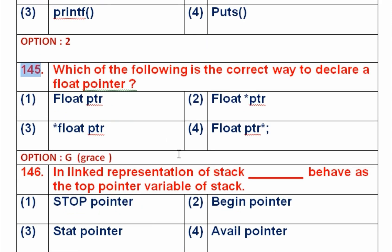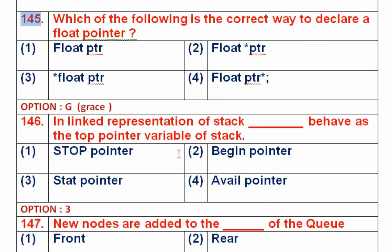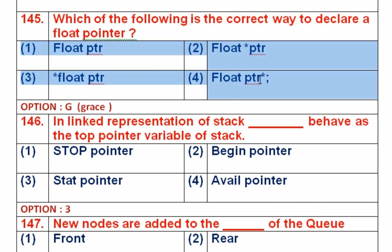Question number 145: Which is the correct way to declare a pointer variable? A pointer variable is declared with the syntax: data type, followed by asterisk, followed by the name of the variable. For a pointer to a float variable, float is the data type, star is the asterisk operator, and ptr is the name of the pointer followed by a semicolon. All four given options for this question are incorrect, so the right answer would follow that syntax.